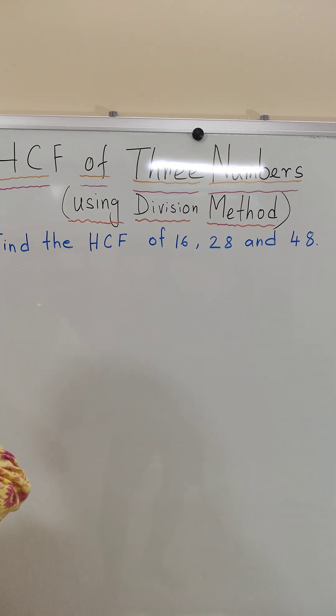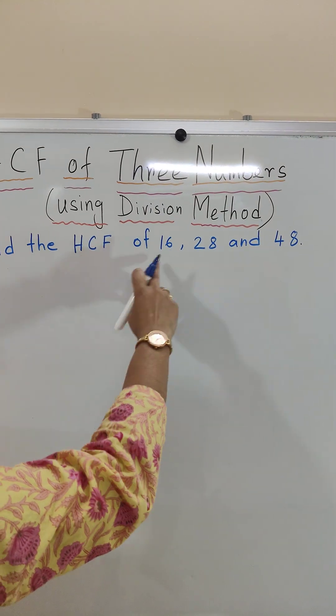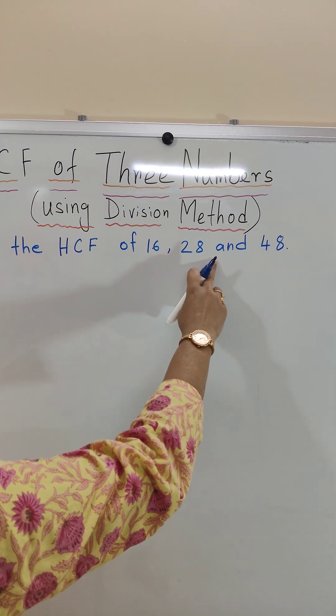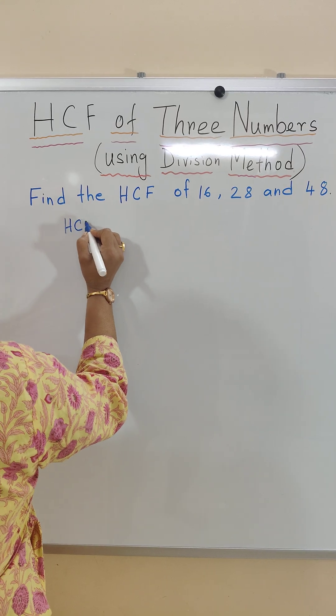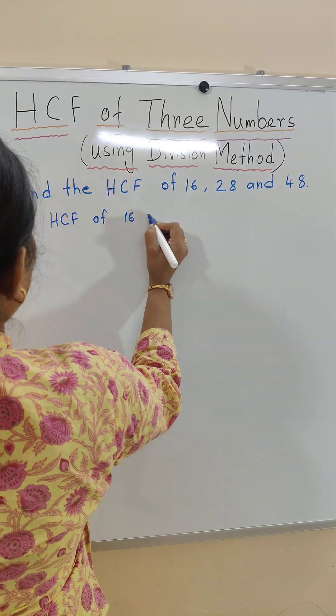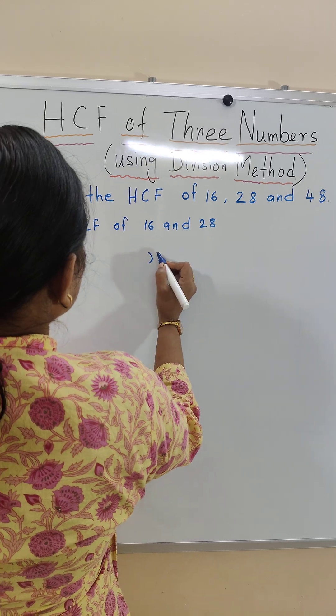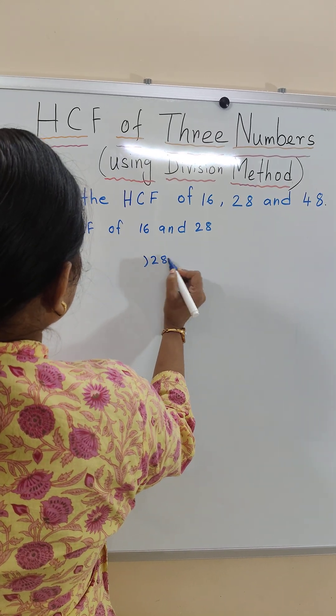First we will find the HCF of any two numbers among these three numbers: 16, 28 and 48. We will take the first two numbers in the HCF of 16 and 28. 16 is the small number and 28 is the bigger number.